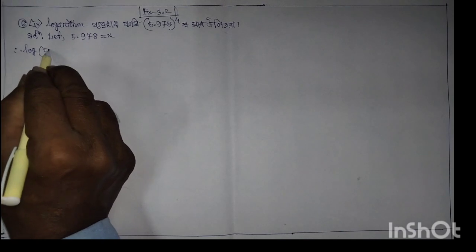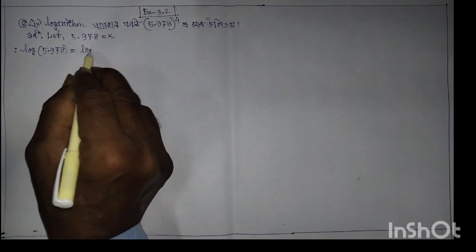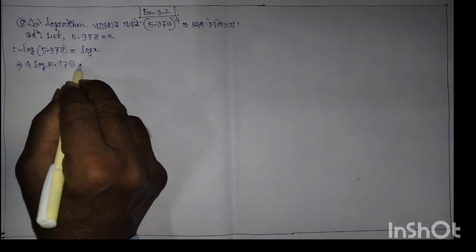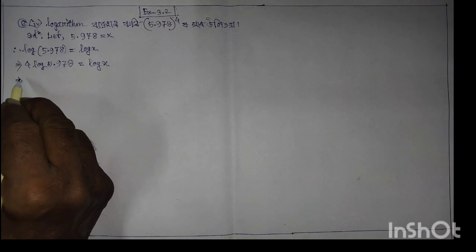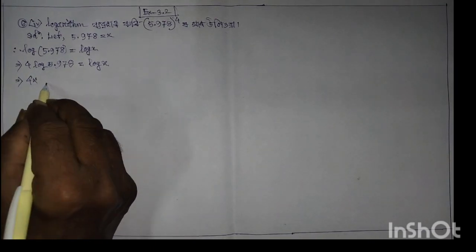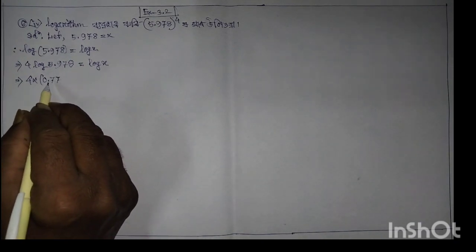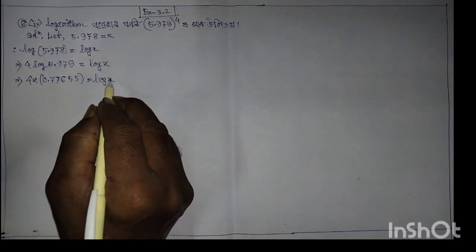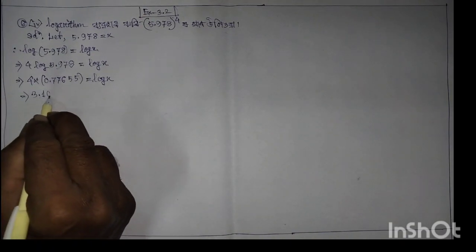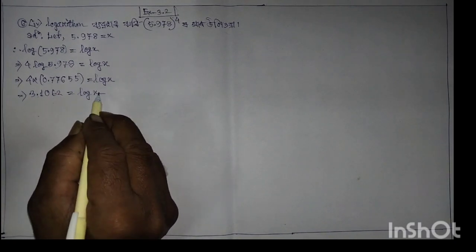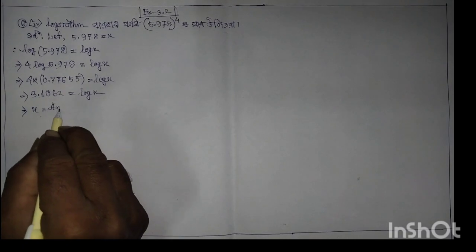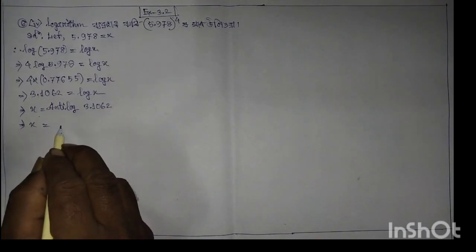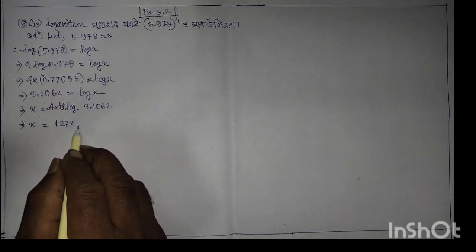Log 5.978, 1, 2. Log 1, 3. 4 log 5.978, 1, 2, log x. Log x equals 3. 1, 0, 0, 62 is equal to log x, which implies x is equal to antilog 3.1062, which implies x is equal to 1277.